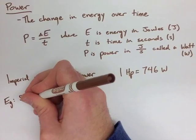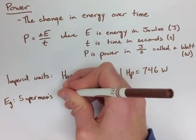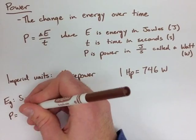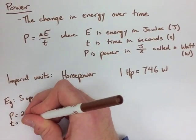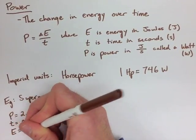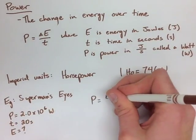Now, with the first example with Superman's eyes, we have a power of 2.0 times 10 to the 6 watts. This happens over 20 seconds, and we're trying to find the energy given off.